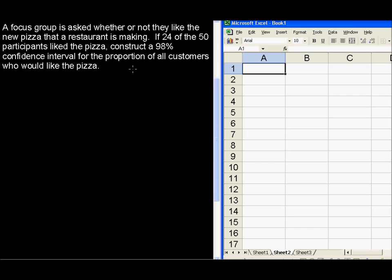A focus group is asked whether or not they like the new pizza that a restaurant is making. If 24 of the 50 participants liked the pizza, construct a 98% confidence interval for the proportion of all customers who would like the pizza.